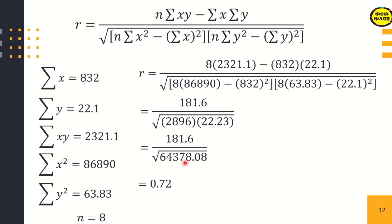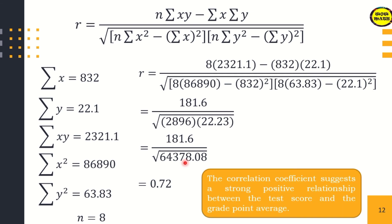We are going to divide now. 181.6 divided by the square root of 64,378.08, the answer is 0.72. You can check. What does 0.72 mean? That is the correlation coefficient we obtained. It suggests a strong positive relationship between the test score and the grade point average. There is a strong positive relationship. This means if the GPA is high, the test score is also high.